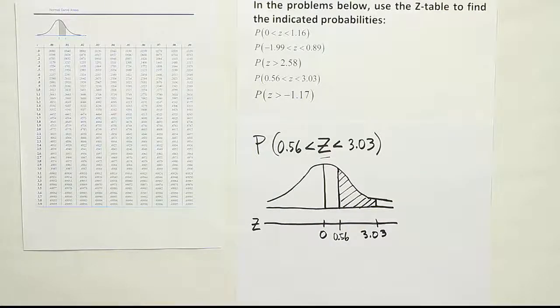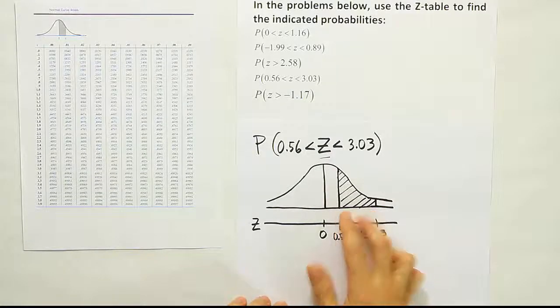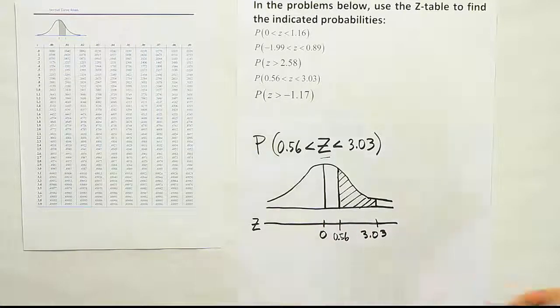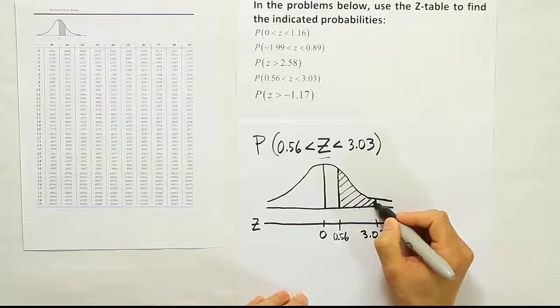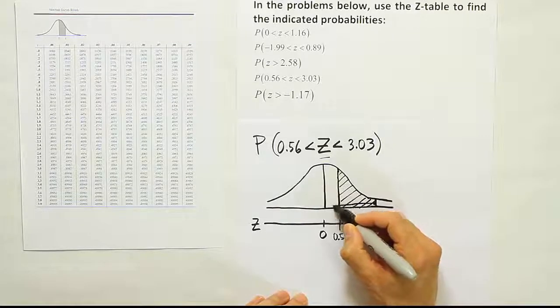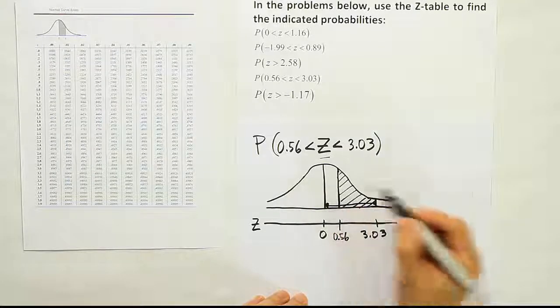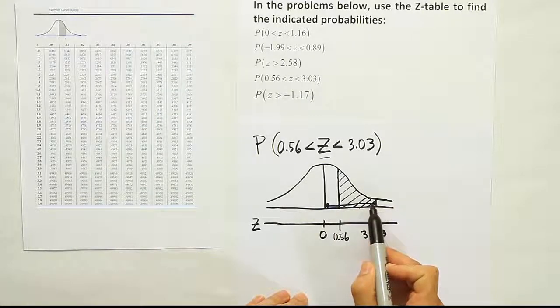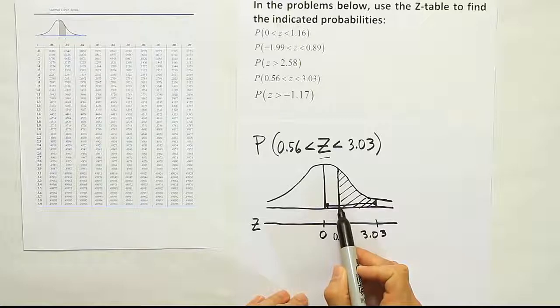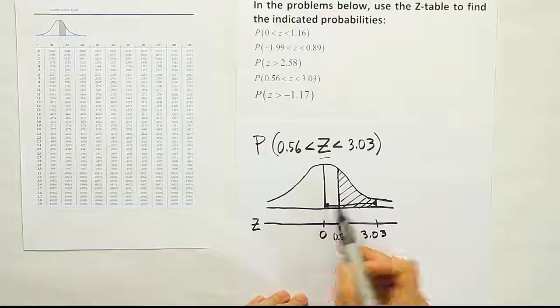Alright, now, once we have the drawing shaded, we're supposed to go to the table and look up our Z-scores. Let's think about what's going to happen when I look up this first score. When I look up this value, I'm going to get all the area from here all the way to the center. Remember, that's how the Z-score chart reads. That means it's going to give me this area from here to here, which is the area that I want, and then it's going to give me a little extra, a part that I don't want.